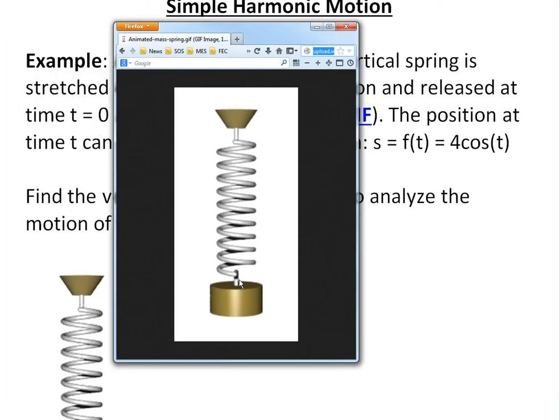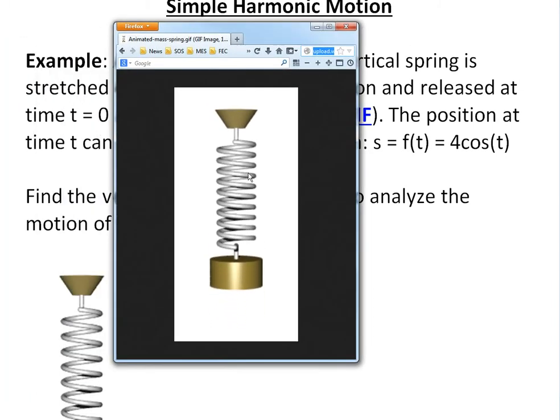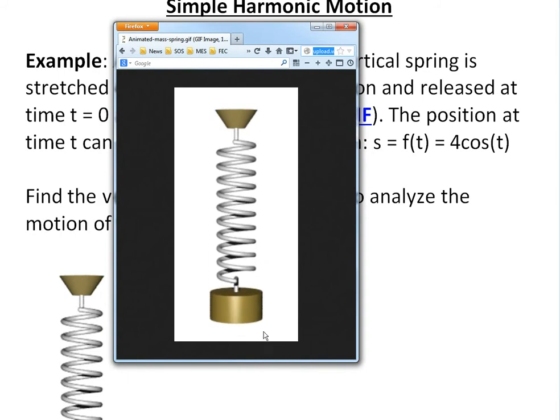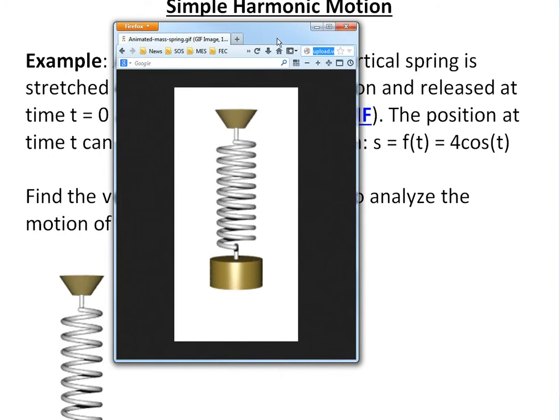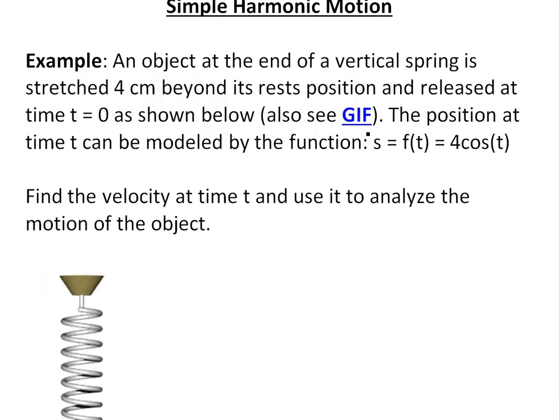You have something like this that goes up and down, and if there's no friction it's going to go on forever. It just keeps going up and down - there's a max here, a center somewhere here, and it goes up, etc. The position at time t can be modeled by the function s = f(t) = 4cos(t).